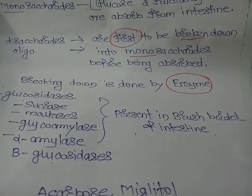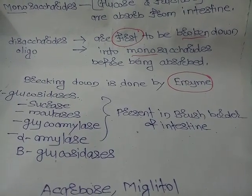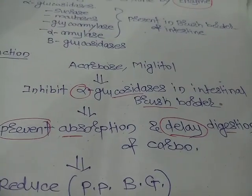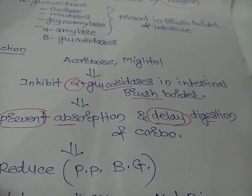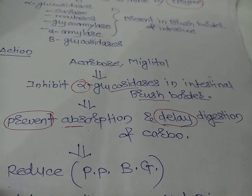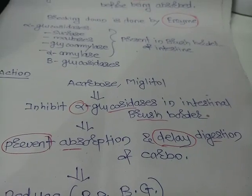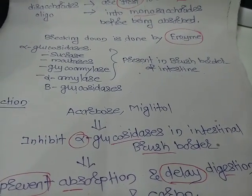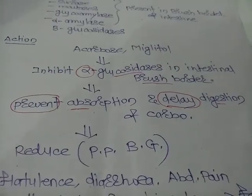These brush border enzymes break down oligosaccharides into disaccharides, and disaccharides into monosaccharides. Drugs like acarbose, miglitol, and voglibose inhibit the alpha-glucosidase enzyme in the intestinal brush border cells. If this enzyme is inhibited, there will be no breakdown of oligosaccharides or disaccharides into monosaccharides.